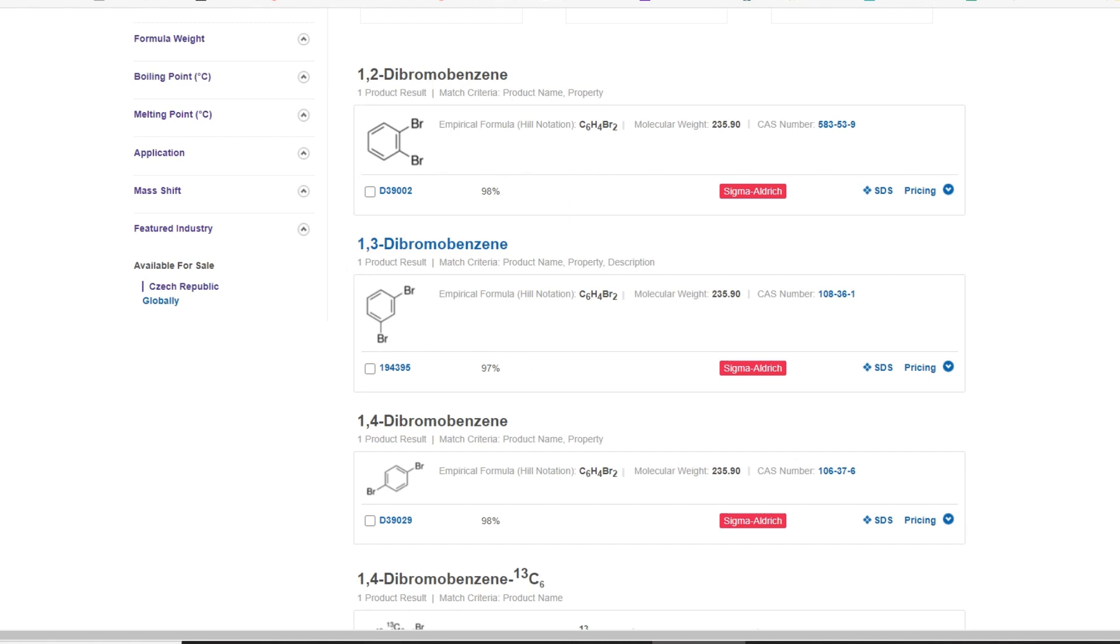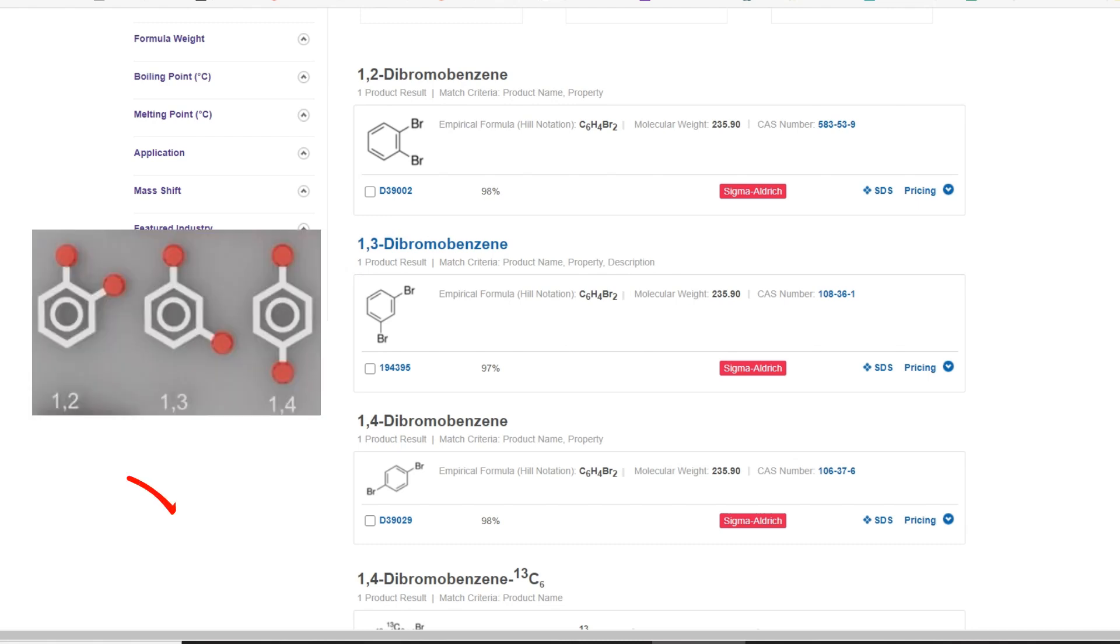But there's some internal inconsistency here. I'll tell you now, the correct model is the molecular orbital model with the circles in the middle, so there should only be three isomers. But they're selling three isomers only.